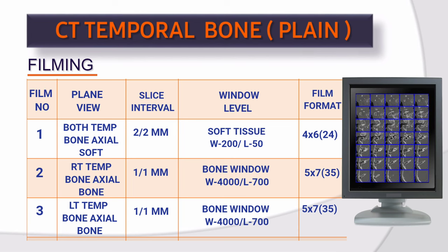Film 2: Plain view, right temporal bone axial bone. Slice interval 1×1 mm. Window level: bone — window width 4000, window level 700. Film format: 5×7, 35 images.